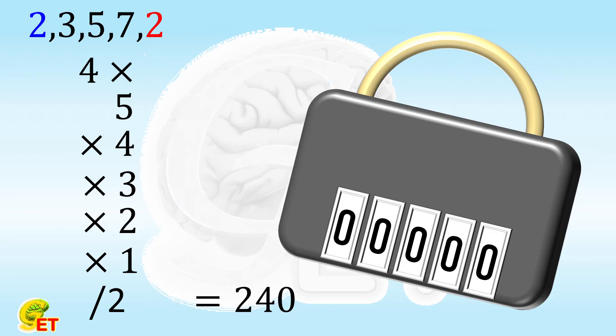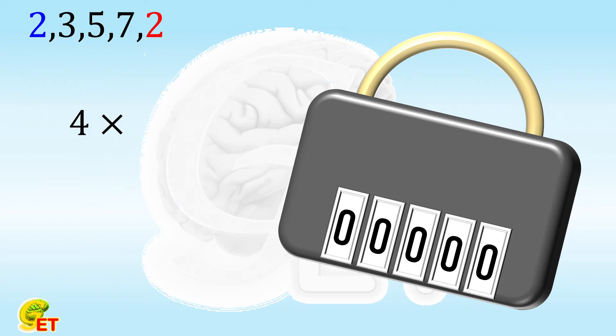We can also deal with this question in another way. Of course we still start from four cases in terms of the identical numbers. This time let's consider the places first. We have a total of five places. First we select two out of them for the two identical numbers. This is a typical combination problem.